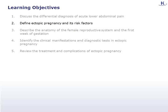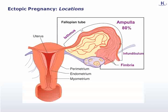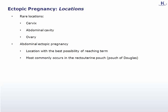Ectopic pregnancy is defined as pregnancy outside of the uterine cavity. If the blastocyst, which is the embryologic structure that should implant in the uterus, doesn't reach the endometrium for any reason, it can regress or implant in any anatomic site along its pathway. It is established that one to two percent of all pregnancies are ectopic. The most common location is the ampulla of the fallopian tube, occurring in eighty percent of cases, followed by the fimbriae and the isthmus. Other rare locations include the cervix, abdominal cavity, and ovary. Of all these locations, the abdominal cavity offers the best probability of nearing term.